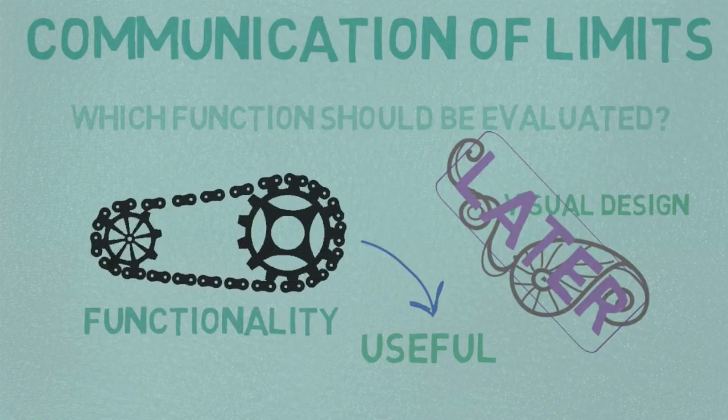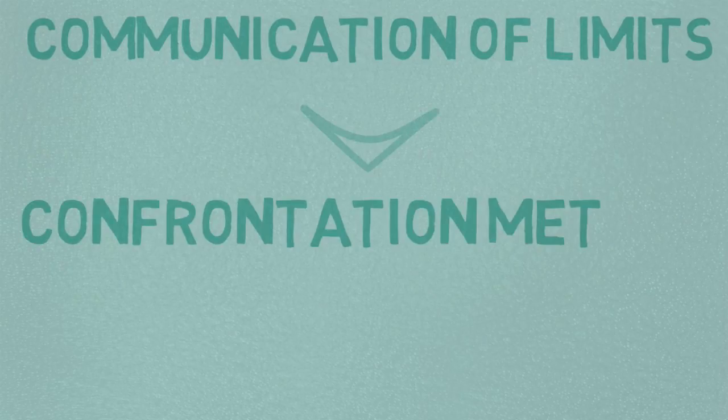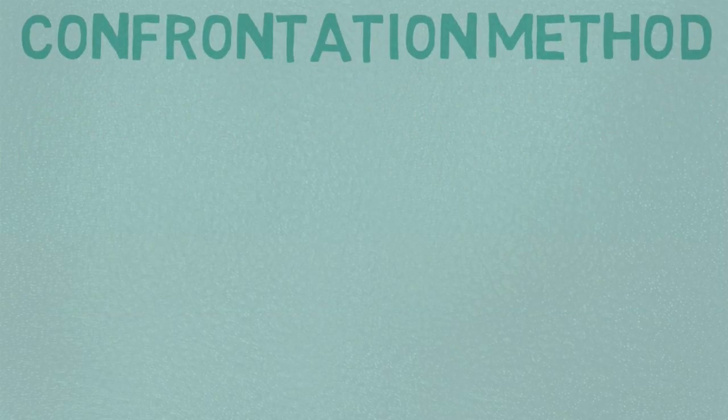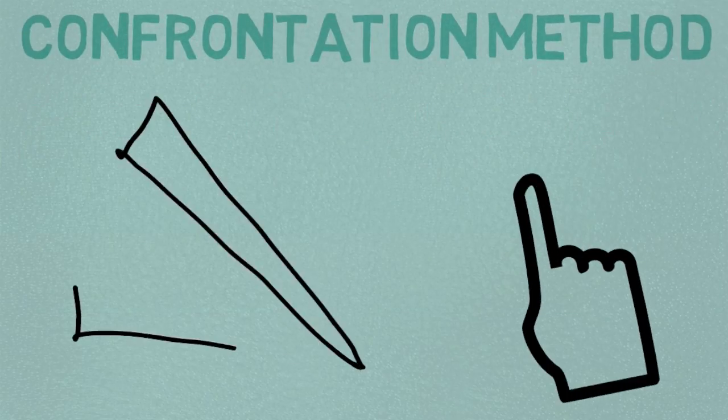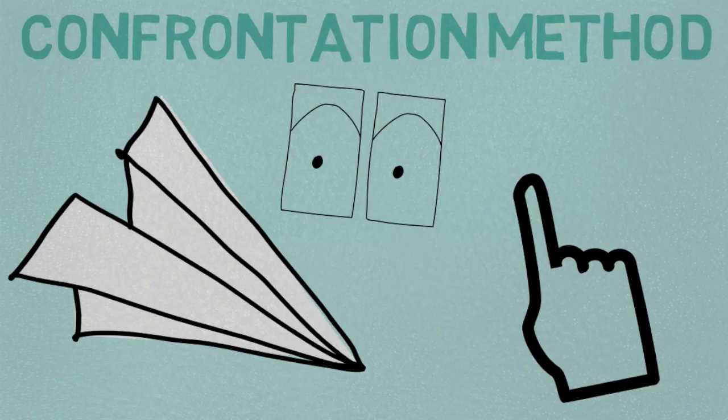Which confrontation method is the best to focus the attraction on the level of interest? A confrontation method describes the way people come into contact with a prototype or artifact. A paper prototype for example can be viewed, touched and even be deformed.